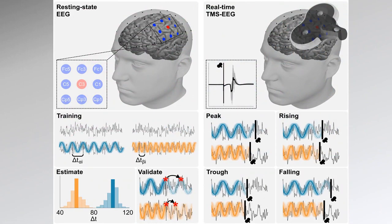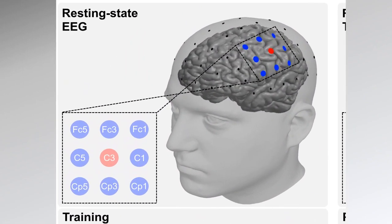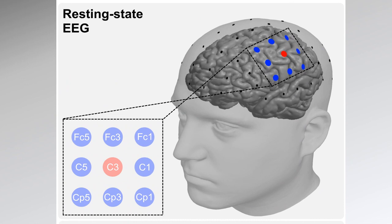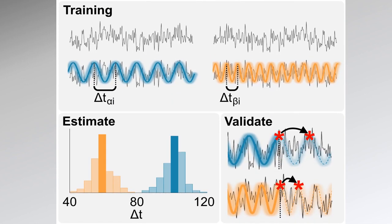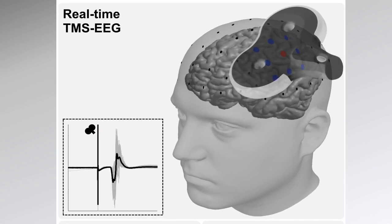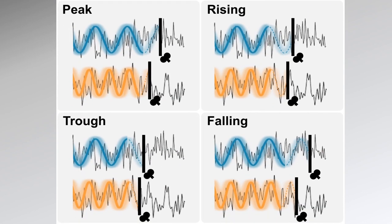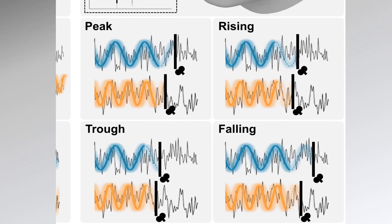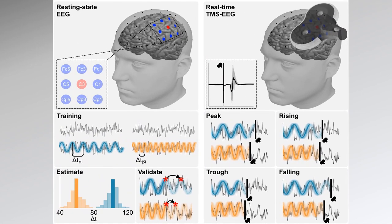The algorithm we developed, coined as the Educated Temporal Prediction Algorithm, is trained on a person's individual brain oscillation pattern in a resting state measurement. This allowed us to speed up the online analysis to a couple of milliseconds and instantaneously target the peak, the trough, the rising phase, and the falling phase of the motor cortex mu and beta rhythms.